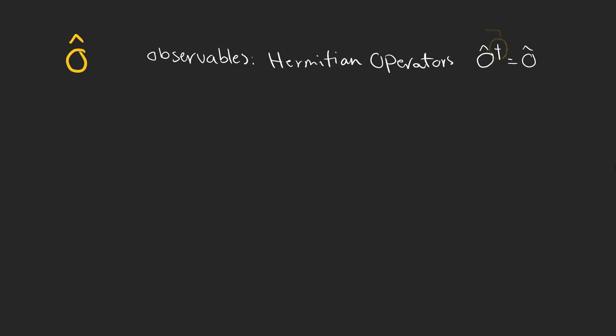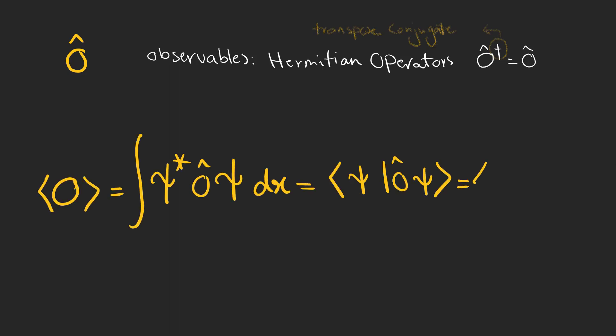Now, let's move on to observables which are represented by Hermitian operators. We can find the expectation value of an observable by this equation.